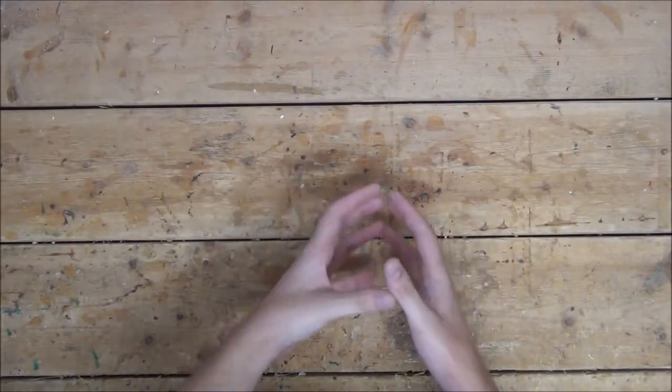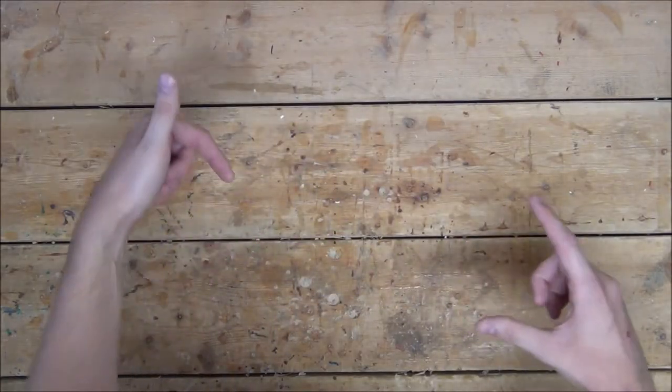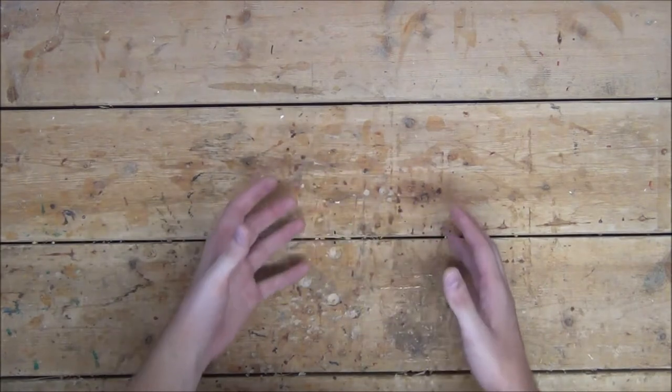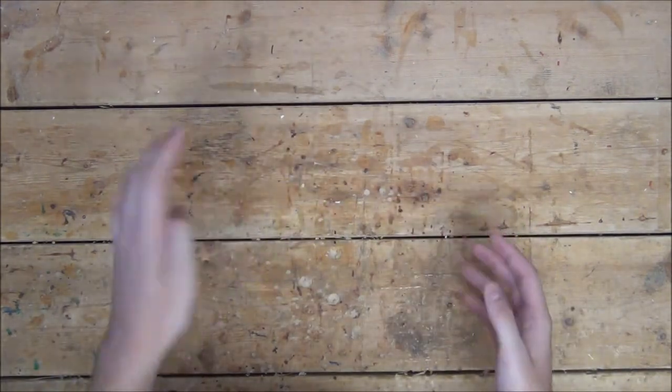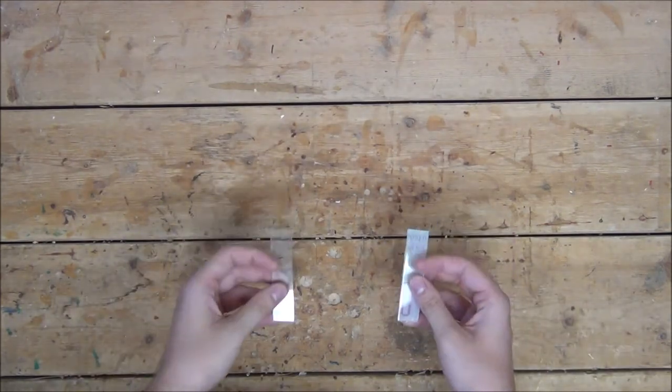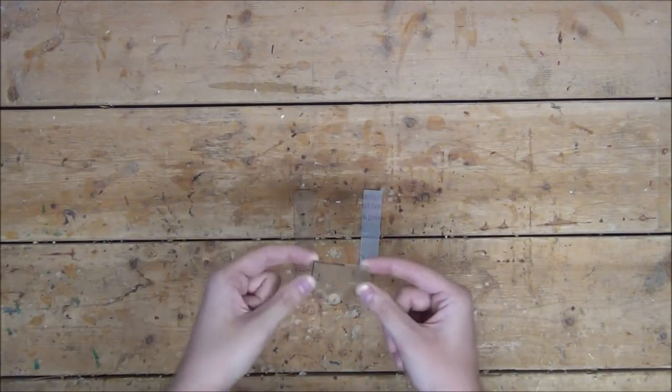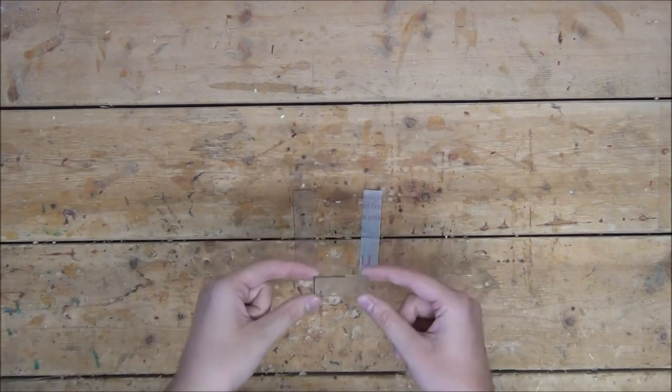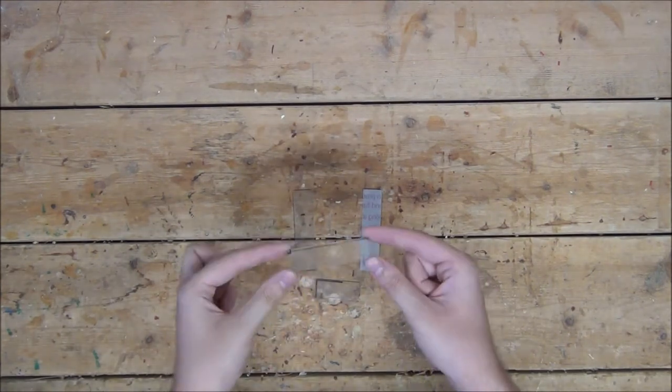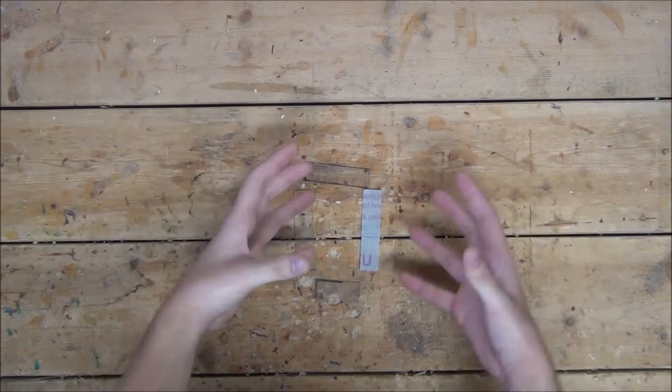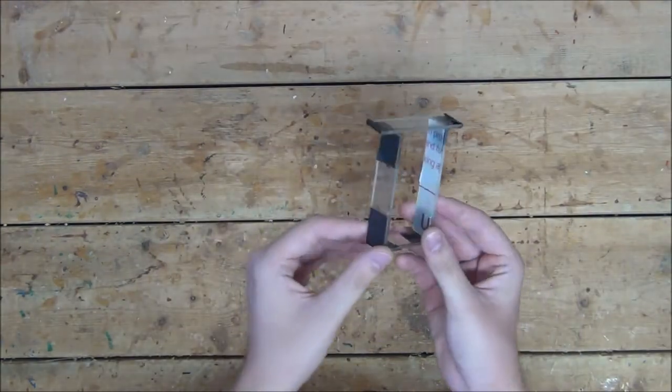So to begin, we're going to start by constructing the actual center frame of the robot itself. To do this, I'm going to cut out four three-quarter inch wide strips of plastic. I'm going to want the two sides to be three and one-quarter inch long, the bottom to be one and three-quarter inch long, and the top to be two and three-quarter inch long. That way, when you put it all together, it'll look something like this.